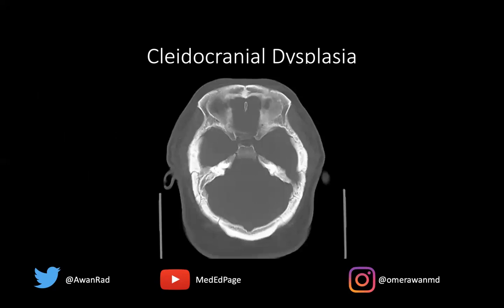I want to show a CT image on bone windows of the cranium and calvarium. Notice we have intrasutural bone here — this is a young person where we have Wormian bones, intrasutural bone that shouldn't normally be here. This is what Wormian bones look like on a CT examination, an axial CT on bone windows. Just another image to go along with the frontal view of the chest for this great case of cleidocranial dysplasia, which of course is an autosomal dominant inheritance mode.